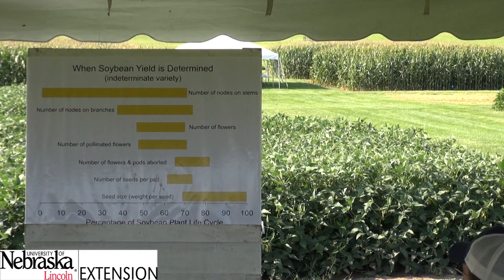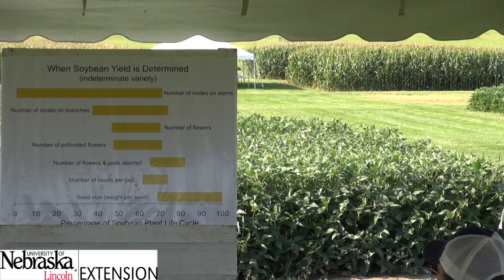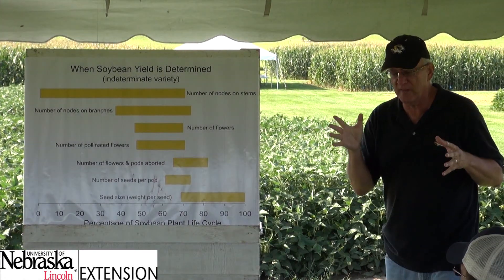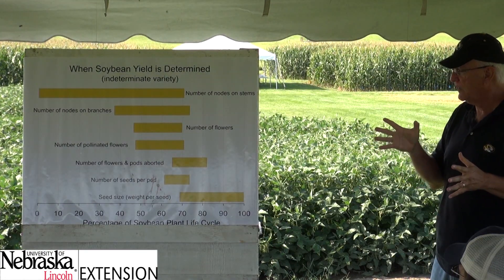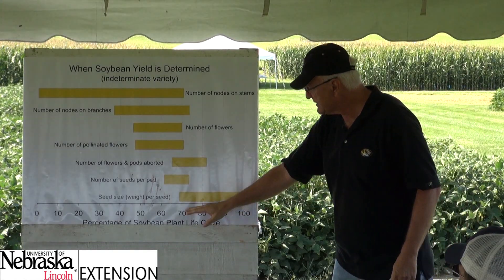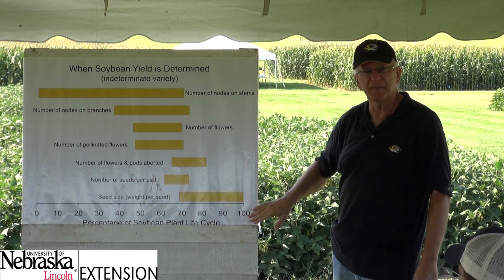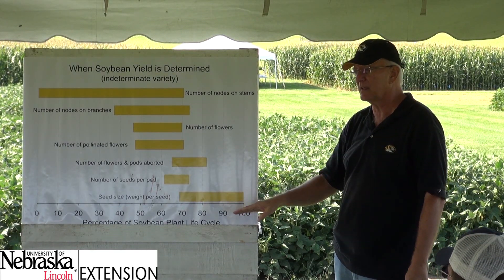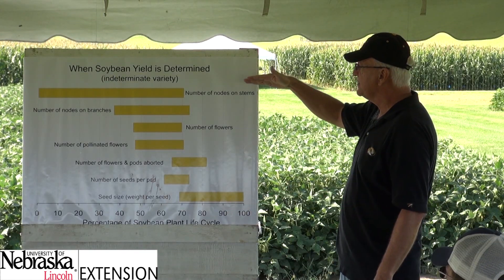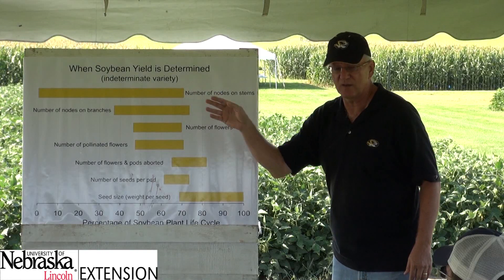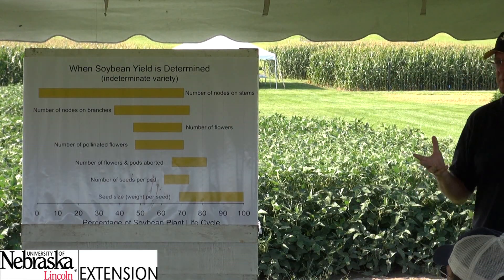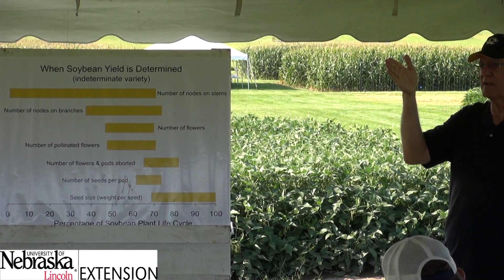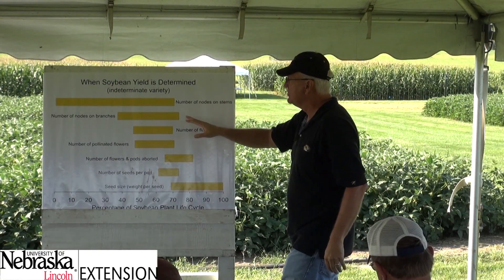This is a graph I put together that I share with farmers and advisors in my state. It helps me focus on when the plant is doing what that's related to yield. The x-axis is the percent of the life cycle of the plant — just on a percentage basis, not days — and these are the various things the plant goes through, with the length of those bars showing the time period when various things are happening.